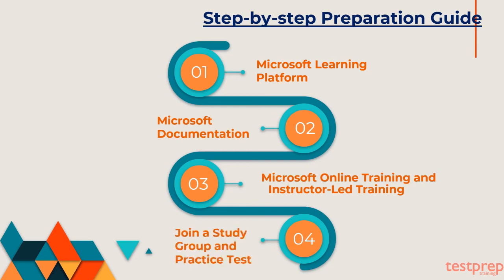Fourth, join a study group and take practice tests. For passing the exam like Administering a SQL Database Infrastructure 70-764, the candidate needs to get and share knowledge. We suggest joining a study group where you can discuss concepts with people who have the same goal, as this will guide the candidate throughout their preparation. The most important step is to try your hands on practice tests, which ensure the candidate about their preparation. There are many practice tests available on the internet, and the candidate can choose whichever they want. The practice test is very beneficial in preparing for the exam like 70-764.